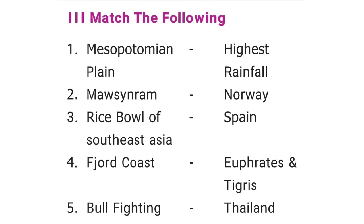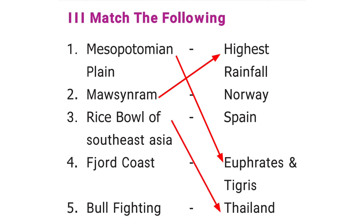The third section is match the following. Mesopotamian Plain — Euphrates and Tigris. Mawsynram — highest rainfall. Rice bowl of Asia — Thailand. Fjord Coast — Norway. Bullfighting — Spain.